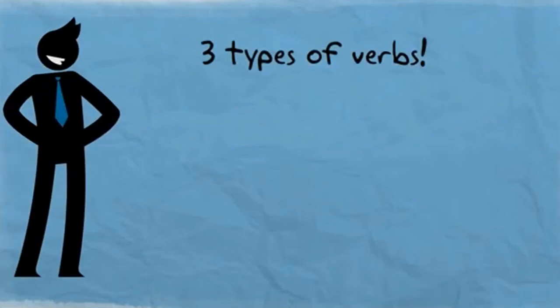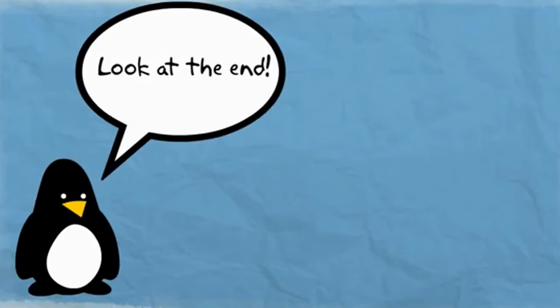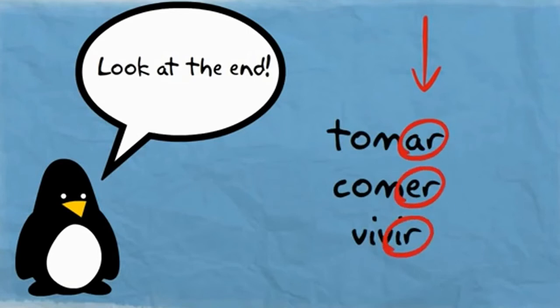You have three types of verbs in the Spanish language: AR, ER, and IR verbs. Each verb corresponds to its ending. AR verbs end in AR, ER verbs end in ER, and IR verbs end in IR.